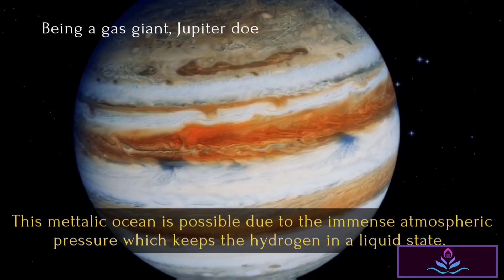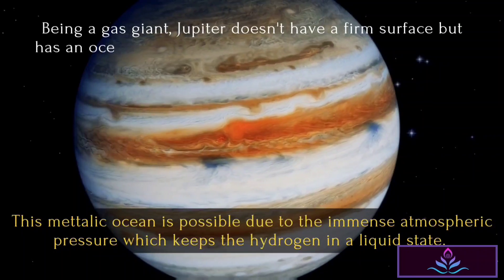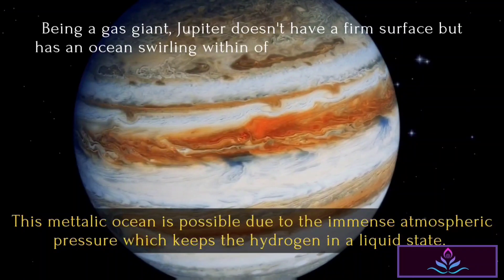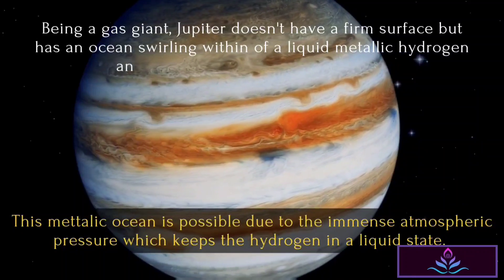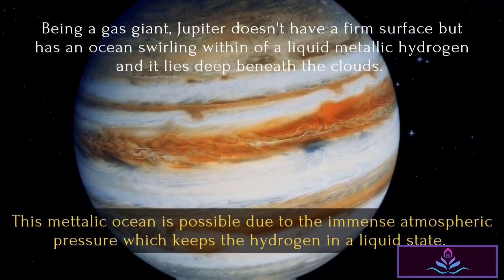Being a gas giant, Jupiter doesn't have a firm surface but has an ocean swirling within of liquid metallic hydrogen, and it lies deep beneath the clouds. This metallic ocean is possible due to the immense atmospheric pressure, which keeps the hydrogen in a liquid state.